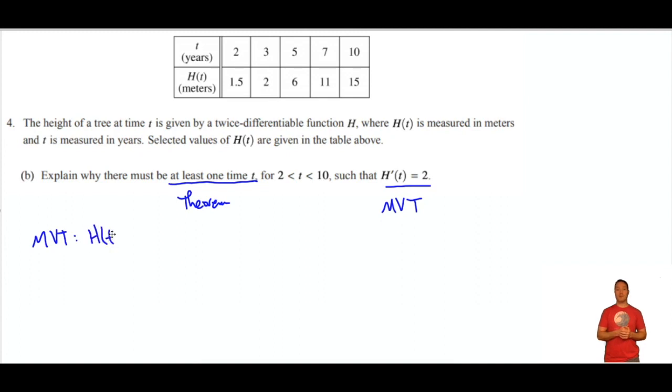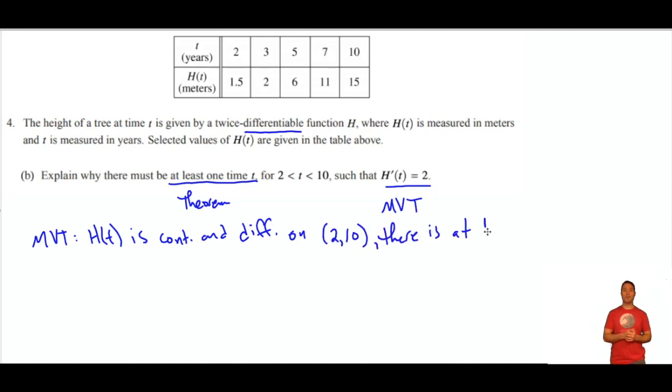The mean value theorem says that if a function, here it's h of t, is both continuous and differentiable on an interval, which it is. They tell us that it's a twice-differentiable function. That just means you can differentiate it twice, like a twice-baked potato. And if it's differentiable on an interval, it must be continuous on the interval. You can't have something that's not continuous but differentiable.